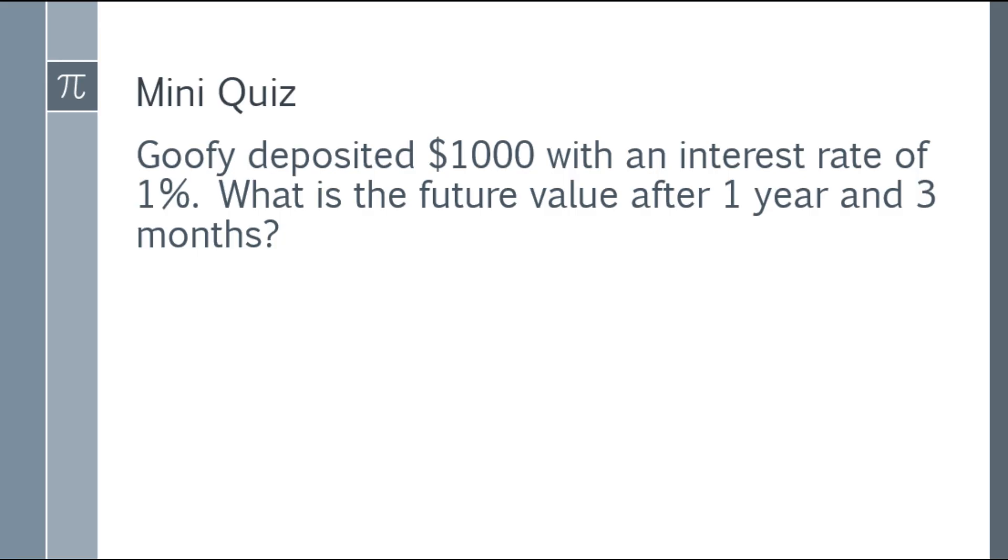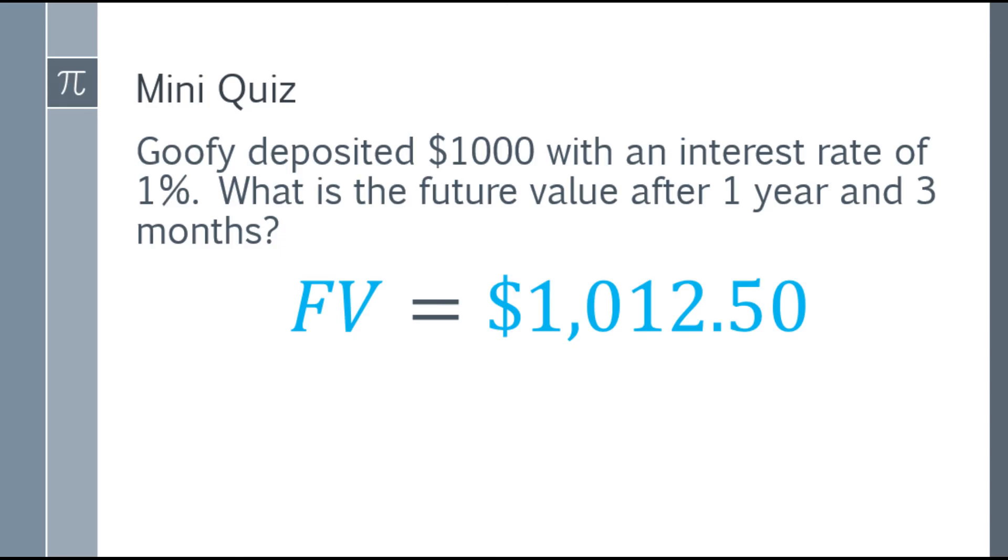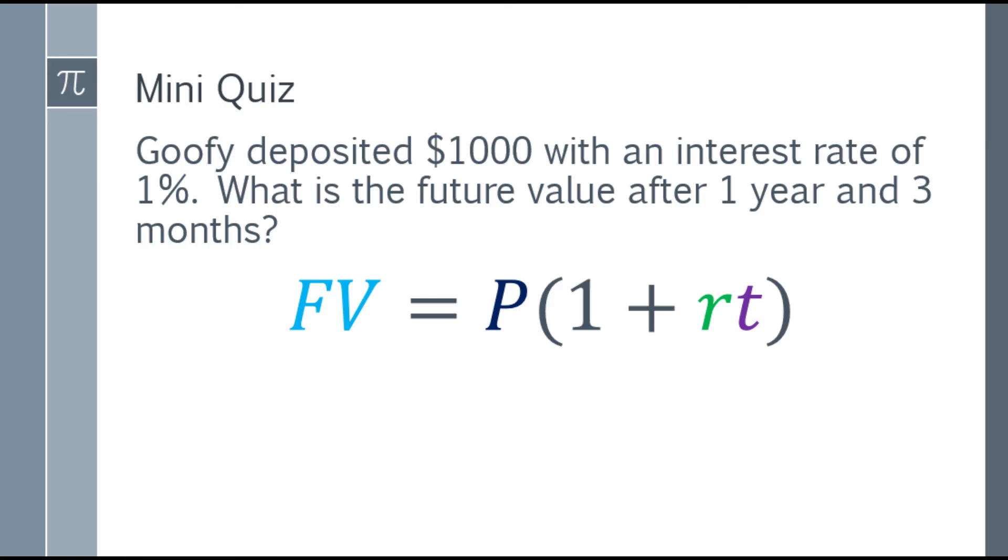Time's up! So the answer is, the future value will be 1,012.50. Alright, so I'll explain how did I arrive at 1,012.50 as the answer? So analyzing the question, we have the principal, we have the rate, and we also have the time. So for that one, we can use the formula: future value is equal to P times the quantity 1 plus RT.